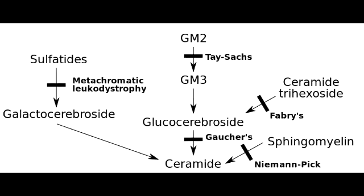What is Metachromatic Leukodystrophy? Metachromatic Leukodystrophy is an autosomal recessive lysosomal storage disease, and it most commonly occurs due to arylsulfatase A deficiency.